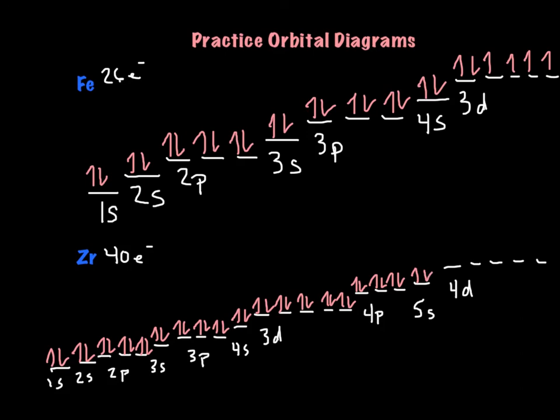So let me count how many I have here. There's 2, 4, 6, 8, 10, 12, 14, 16, 18, 20, 22, 24, 26, 28, 30, 32, 34, 36, 38. I have 2 more to go, and so my last 2 would go in these d's, and they fill singly with the same spin.